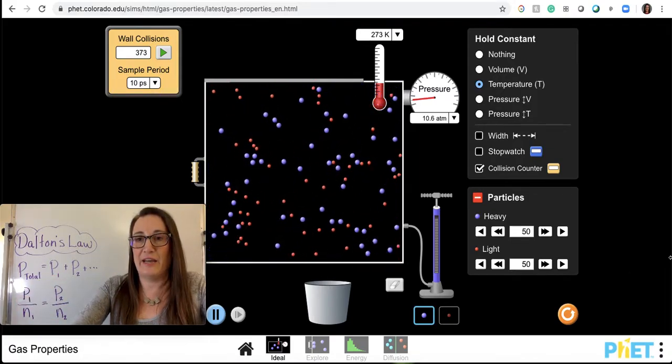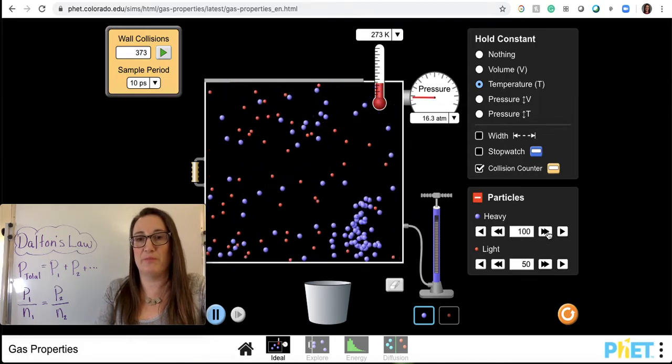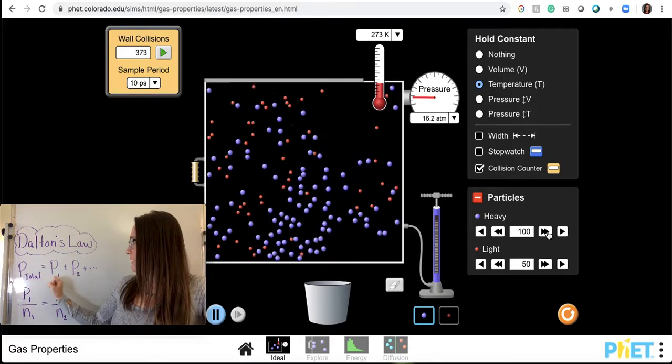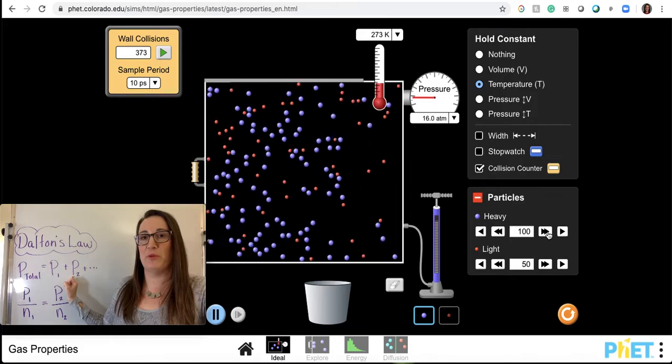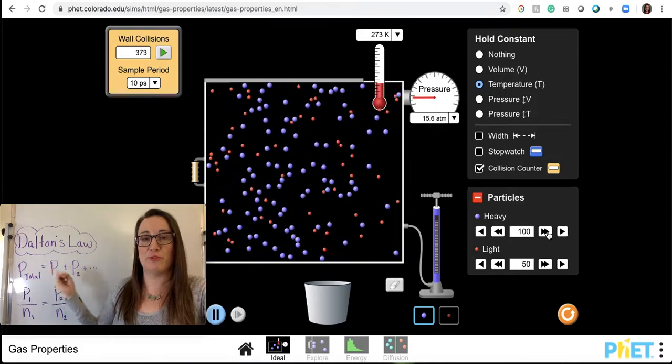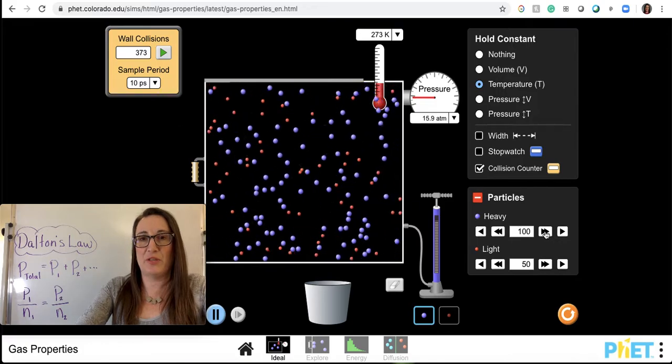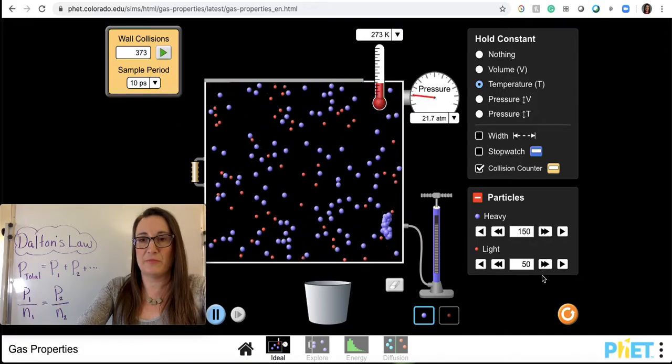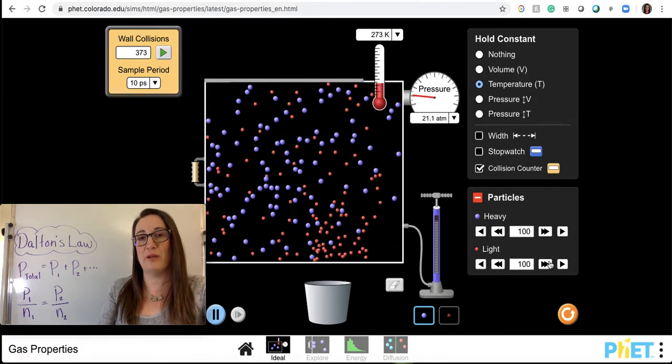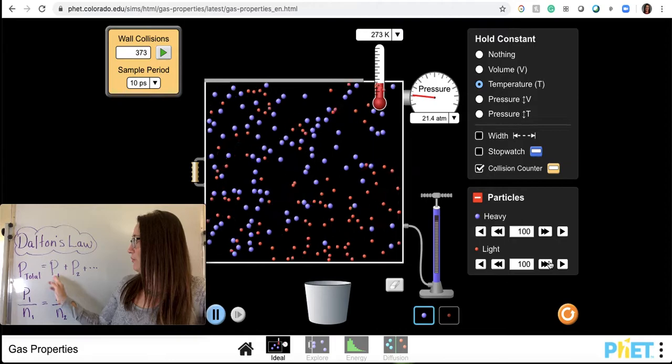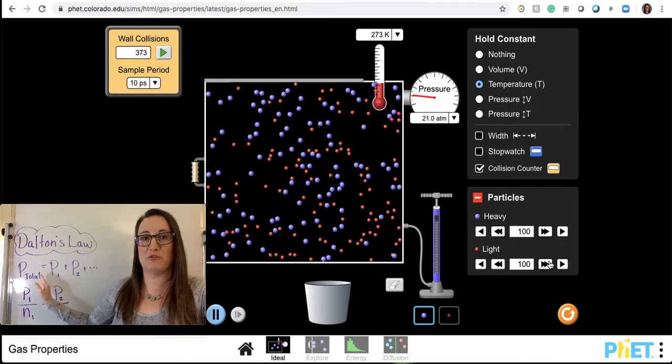So let's add 50 more of the bluish ones. So then we're saying we kept this one the same. This is the red. And now we have double the amount of the purple. So we should get around 15, which we're seeing. I will do the exact same thing with the red ones in just a second. Go back down and up that. So now I have 100 of each. So I should have more pressure. So that's around 10 ATM plus 10 ATM equals 20 ATM.